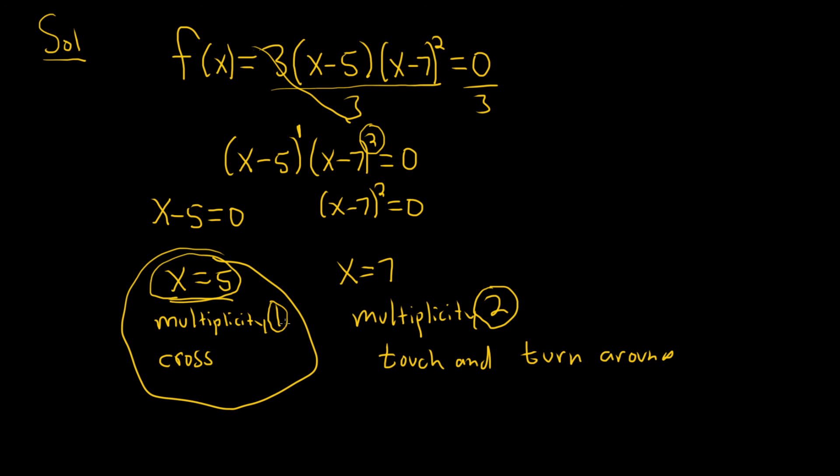x equals five is the zero, the multiplicity is one, and it crosses the x-axis there. x equals seven is a zero, the multiplicity is two, and it touches and turns around there. So that would be the final answer.